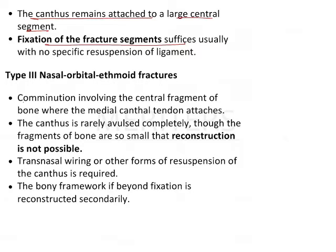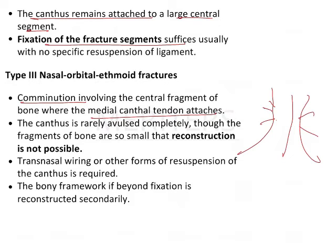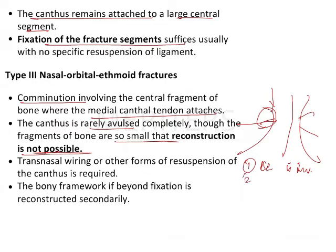Type 3 NOE fractures involve comminution of the central fragment of the bone where the medial canthal ligament attaches. The fracture line passes such that the bone is comminuted, and the ligament attached to the bone has separated from it. The fragments are so small that reconstruction is not possible. Summary: first, the canthal ligament is involved; second, reduction and fixation is not possible; and third, it involves multiple fractures.